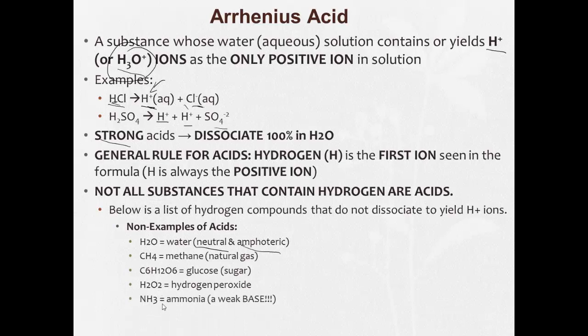Ammonia, not only is it not an acid, it is a weak base. Other than that, most things that start with an H, HCl, HF, HI, HNO3, H2SO4 are all acids. And that hydrogen in front is indicative of the fact that it's an acid.